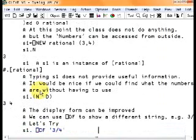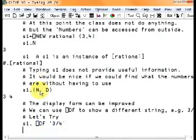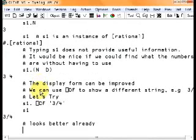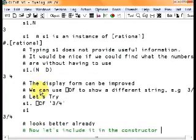So let's try this. If we try to use the system function quaddf and we apply it to S1, and we say we want to see three quarters, then next time we use S1, we get three quarters. Now that looks better.